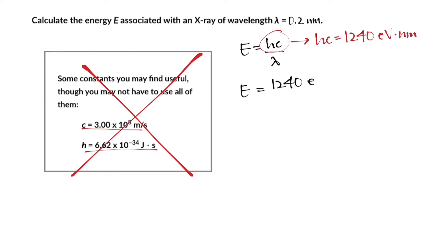So we plug in 1240 eV·nm into the numerator of our fraction and we'll put 0.2 nm in the denominator since that's the wavelength we're dealing with.